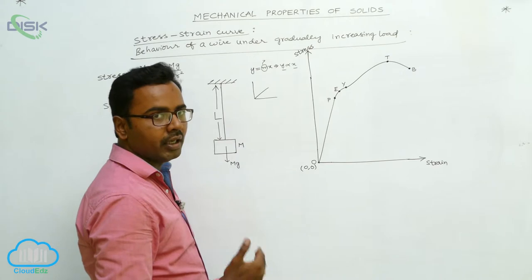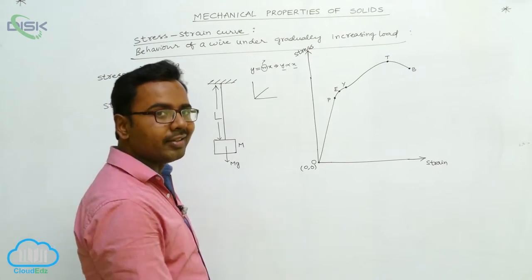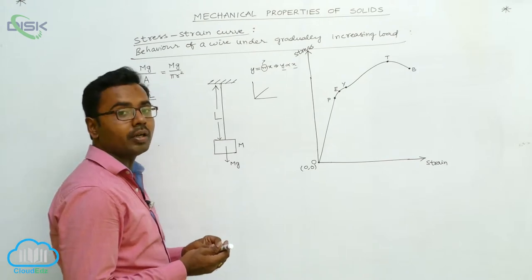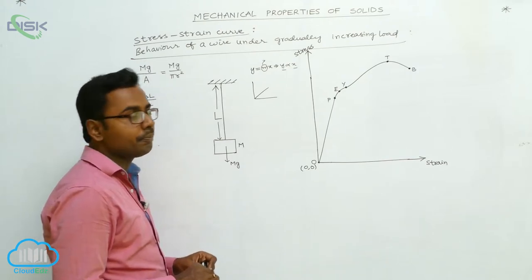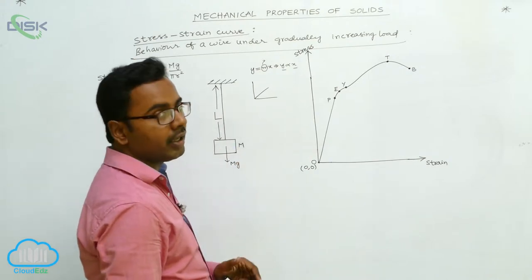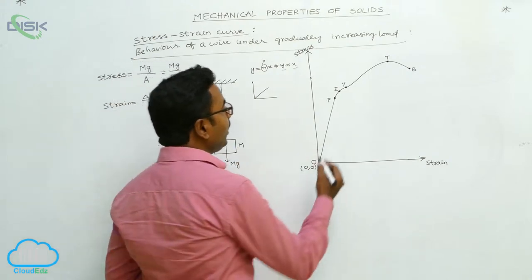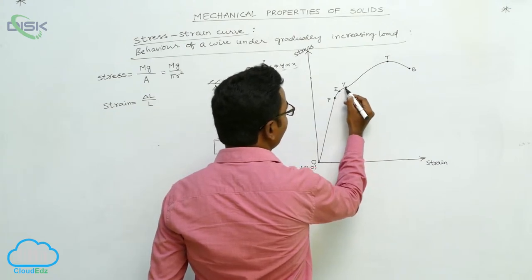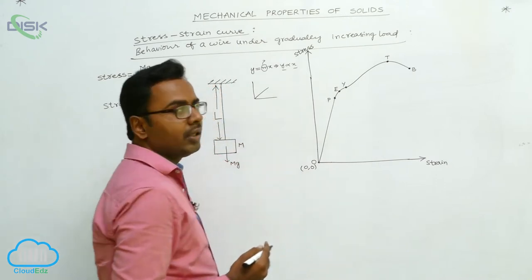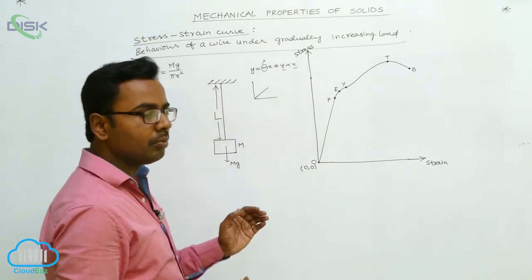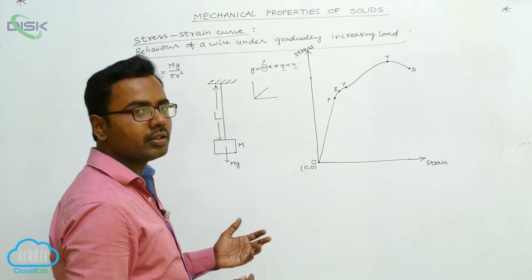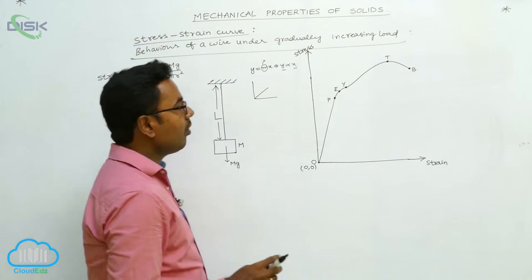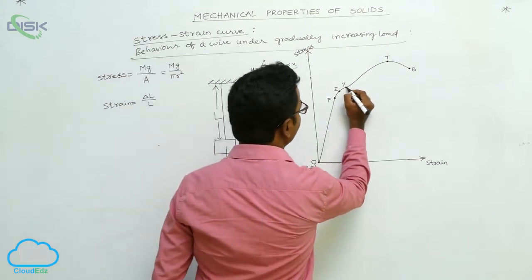Beyond the elastic limit, if the load is increased, the wire loses its elasticity and a permanent increase in length is produced. From E to Y the graph is more curved, meaning for a small increase in load there is a large deformation — a large elongation is produced. Point Y is called the yield point.